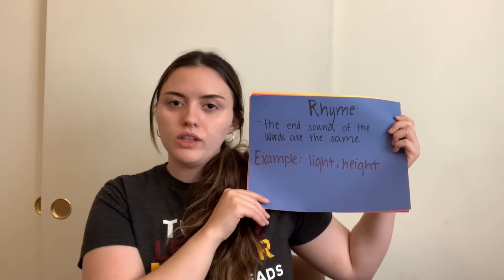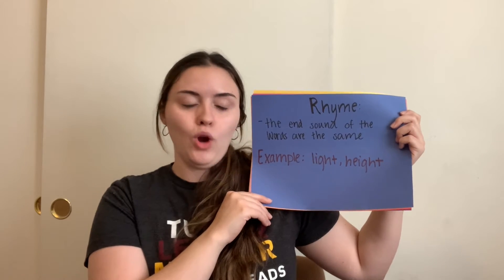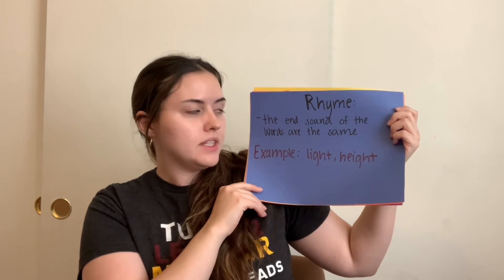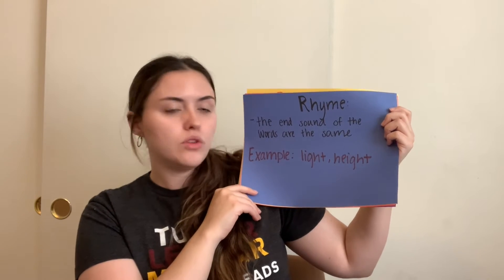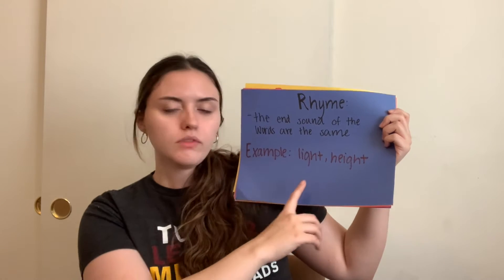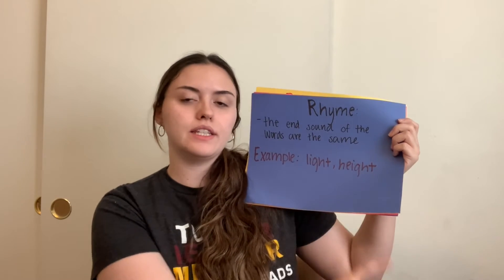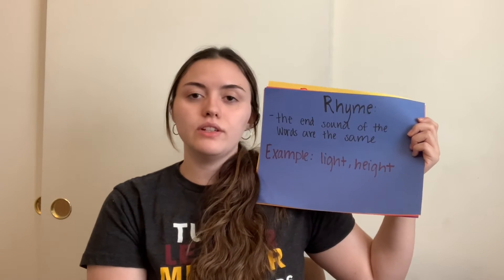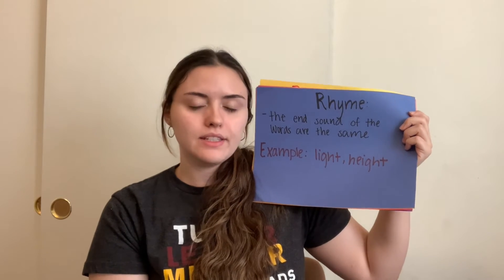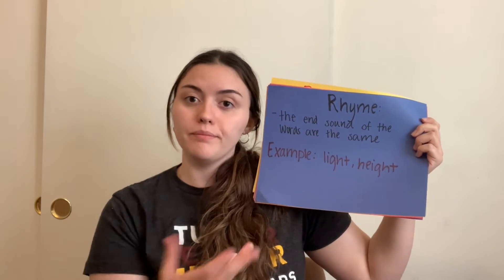Our last word relationship we're going to cover today is rhyme. This simply means that the end sound of the words are the same. The example I have today is light and height — as you can see they both have that -ight sound at the end, which makes them rhyme.